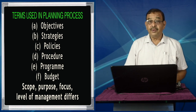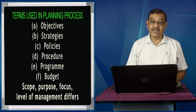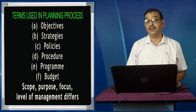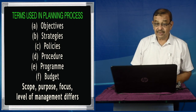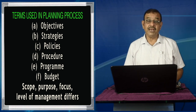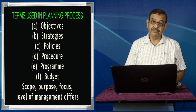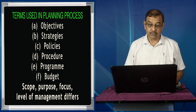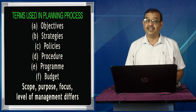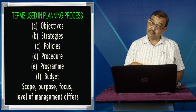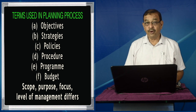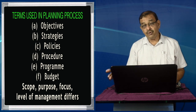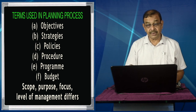Procedure is also a type of plan, as are programs — for example, an advertising program, a cost reduction program, or an inventory management program. Budget is the statement of expected income as well as expenditure over a period of time. The scope, purpose, focus, and level of management will differ for each term. Top management is more concerned with objectives, while bottom-level management is more concerned with procedures. That is why these can be placed in a hierarchy of plans: objectives at the top, then strategies, then internal policies, then procedures and programs, and then budgets.